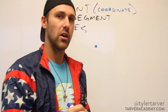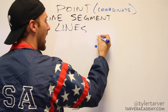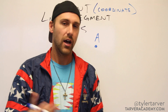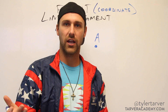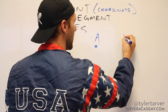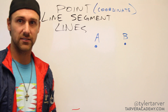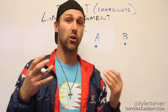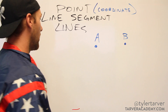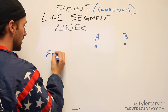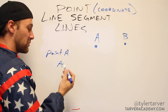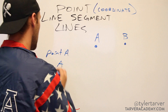Now, whenever we label points, we label points with a capital letter. Usually you start at A and work your way down — it's really up to you and whatever it is that you're looking at. So if we would say point A or point B, those are coordinates, also called points. Whenever you're writing a point, you would always just say point A. That's what you would do.